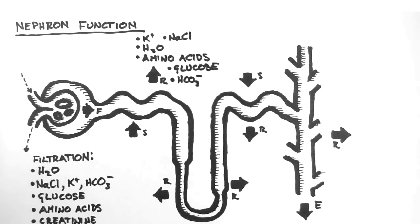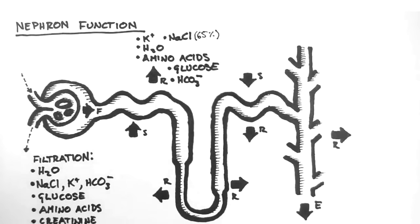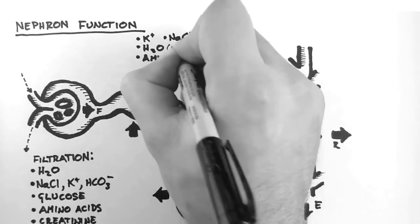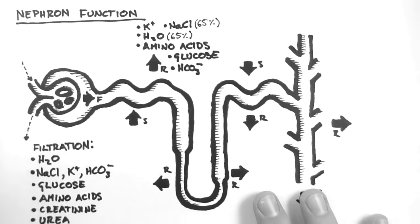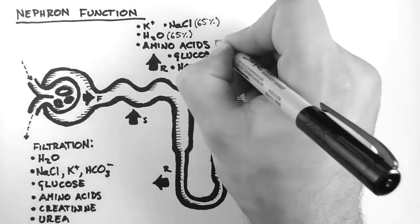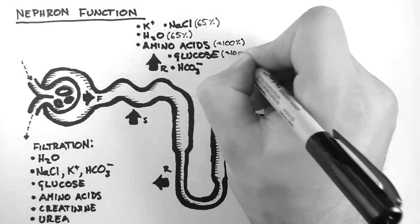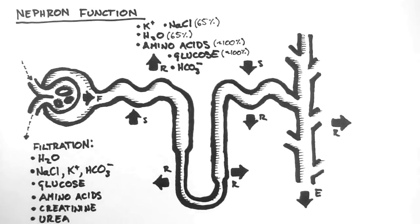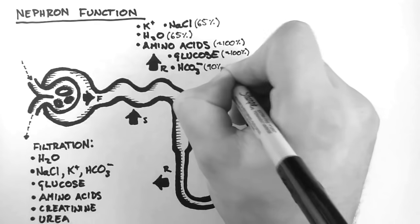And it's important to note that here, 65% of the sodium chloride and 65% of the water that was filtered is reabsorbed. Furthermore, about 100% of the amino acids and glucose that were filtered are reabsorbed, because these are important nutrients for the body, and it would be wasteful to excrete them. And also 90% of the bicarbonate gets reabsorbed.